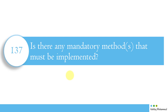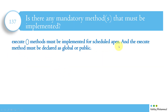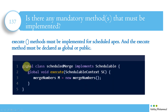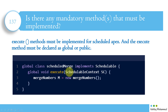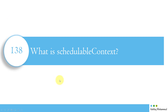The execute method must be implemented for scheduled apex, and it must be declared as global or public. For example: global class ScheduleMerge implements Schedulable — this is the interface we are implementing. Then global void execute — this is the method we implement — and SchedulableContext, which we will discuss shortly. This is very similar to the syntax of batch apex, where we had BatchableContext.